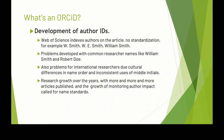Author IDs basically developed from the need to standardize authors. Web of Science indexes authors based on the article with no standardization, because materials are input into the database through optical character scanning — so whatever's on the article is what's there. You get different versions, for example: W. Smith, W. E. Smith, William Smith. Problems developed with common researcher names like William Smith and Robert Doe and Jane Doe, and also for international researchers due to cultural differences in name order and inconsistent use of middle initials. Research growth with more and more articles published and the growth of monitoring author impact called for name standards or some standardization.